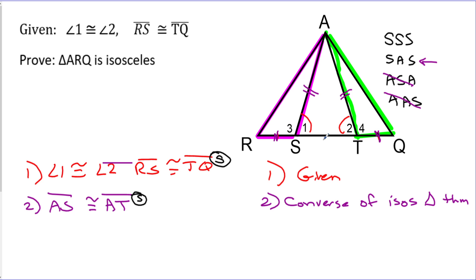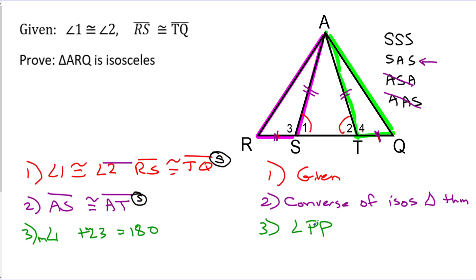Now I have to figure out this whole angle 3, angle 4 thing. Step 3: the measure of angle 1 plus the measure of angle 3 equals 180 - and depending on your teacher, they may ask you to put the little m's in here. That is the linear pair postulate. Similarly, the measure of angle 2 plus the measure of angle 4 also equals 180. These are on the same line because they have the same reason. The linear pair postulate says that two adjacent angles that form a straight line add up to 180 degrees.